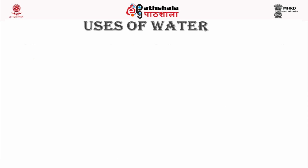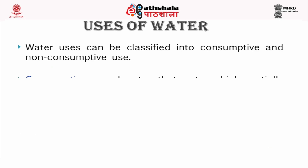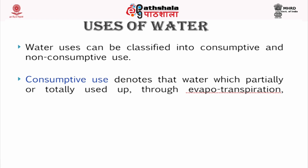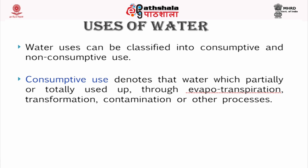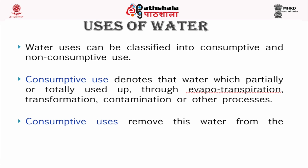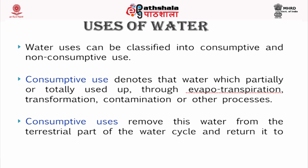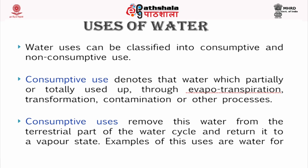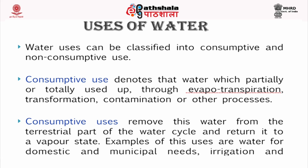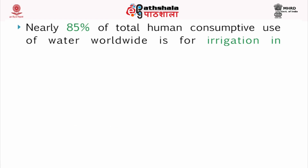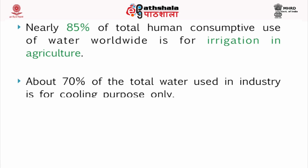Uses of water can be classified into consumptive and non-consumptive use. Consumptive use denotes water which is partially or totally used up through evapotranspiration, transformation, contamination or other processes. Consumptive uses remove this water from the terrestrial part of the water cycle and return it to a vapor state. Examples include water for domestic and municipal needs, irrigation and industry. Nearly 85% of total human consumptive use of water worldwide is for irrigation in agriculture. About 70% of total water used in industry is for cooling purposes only.